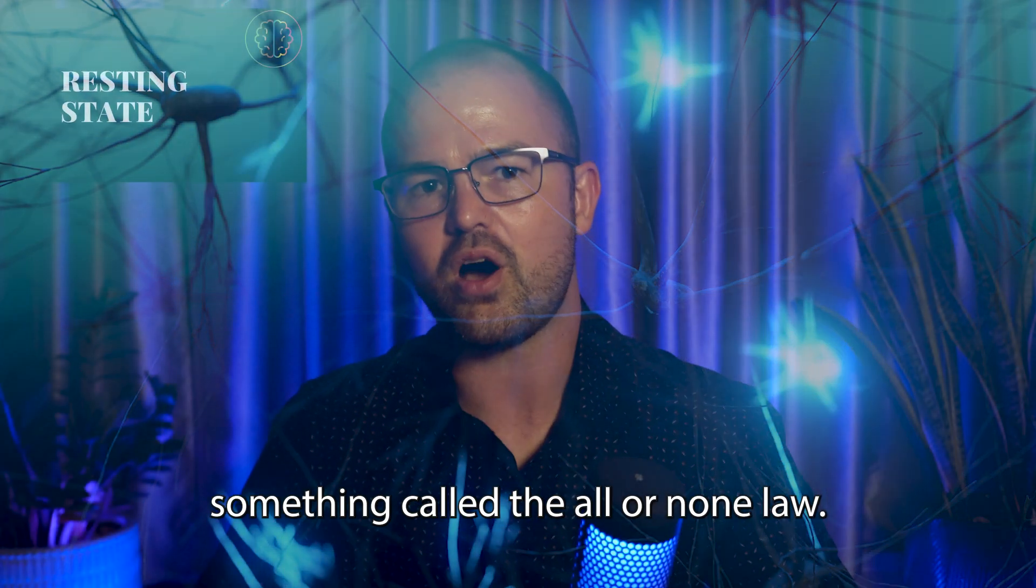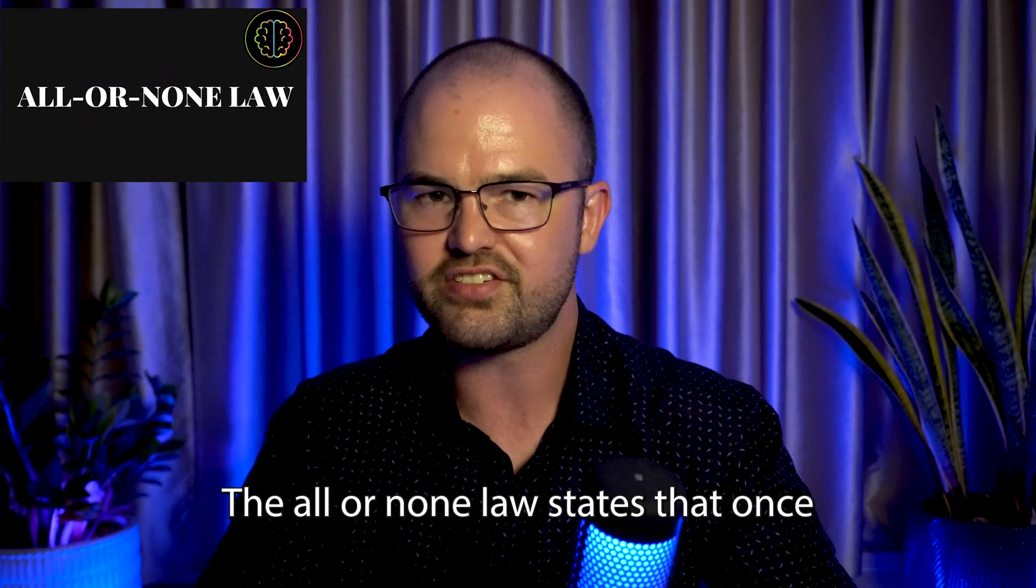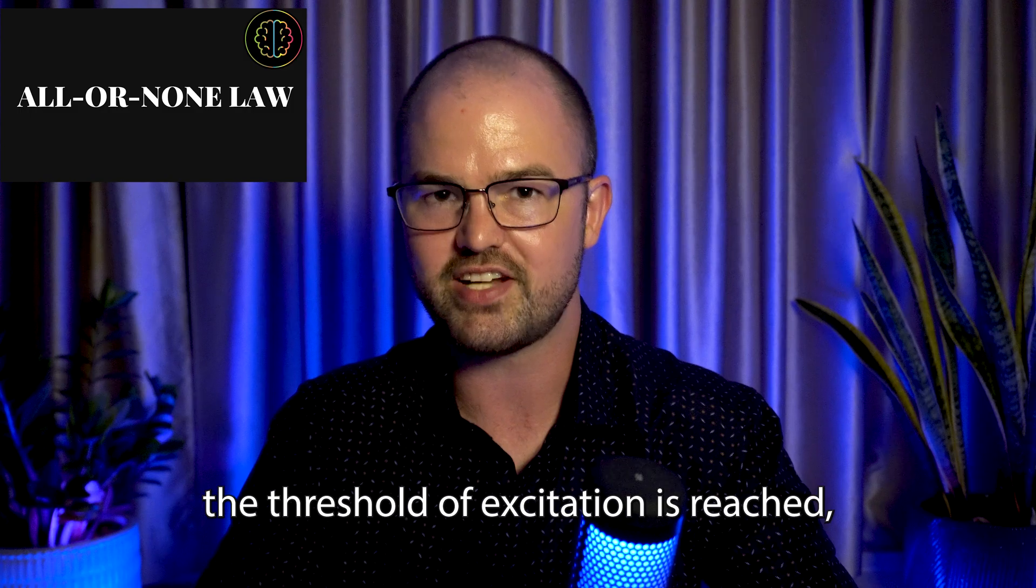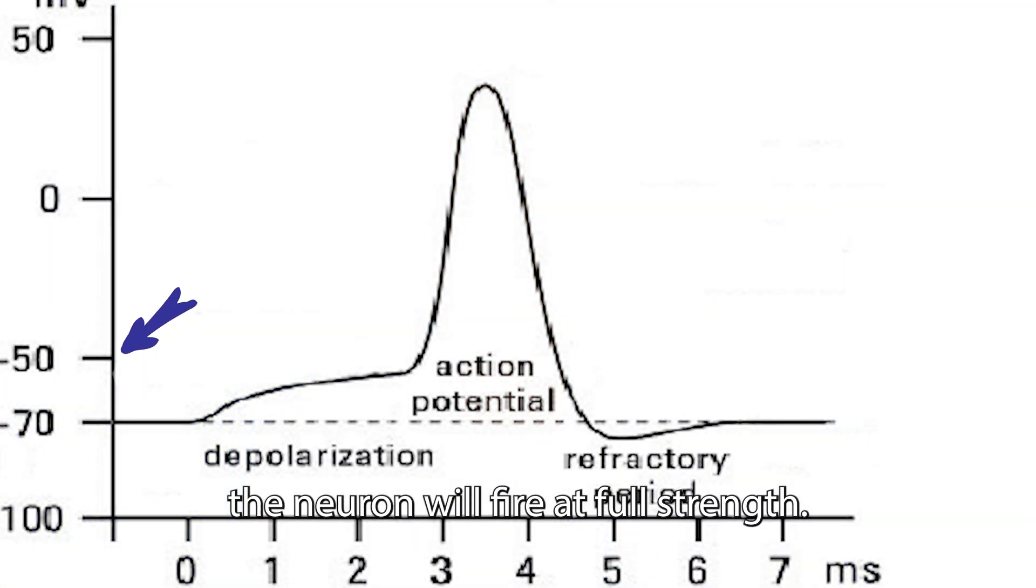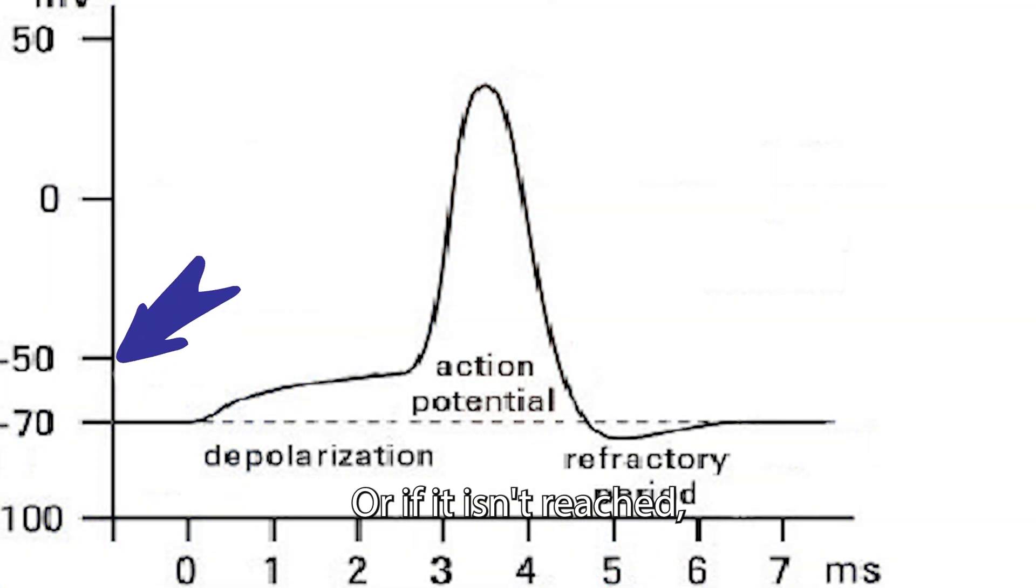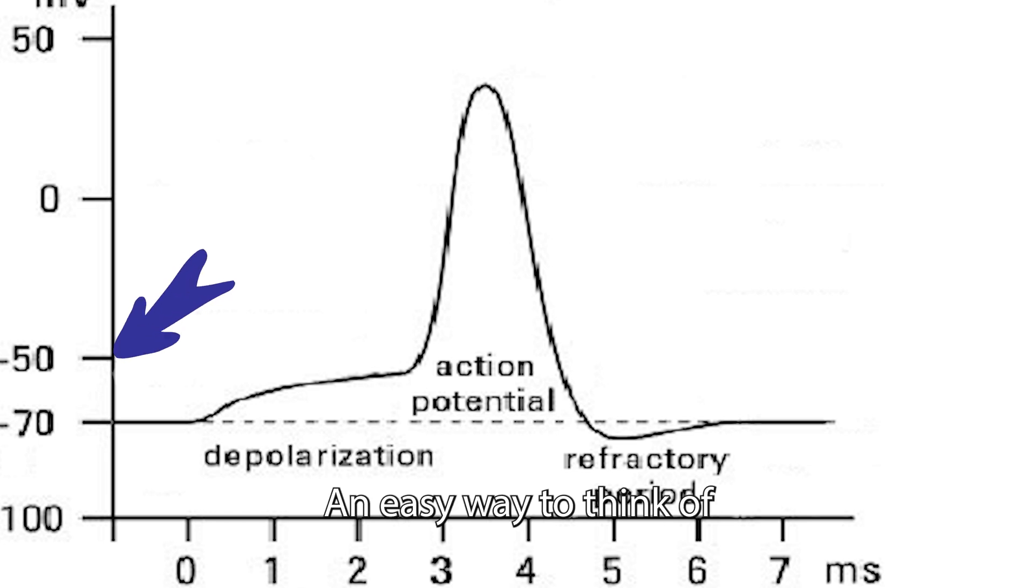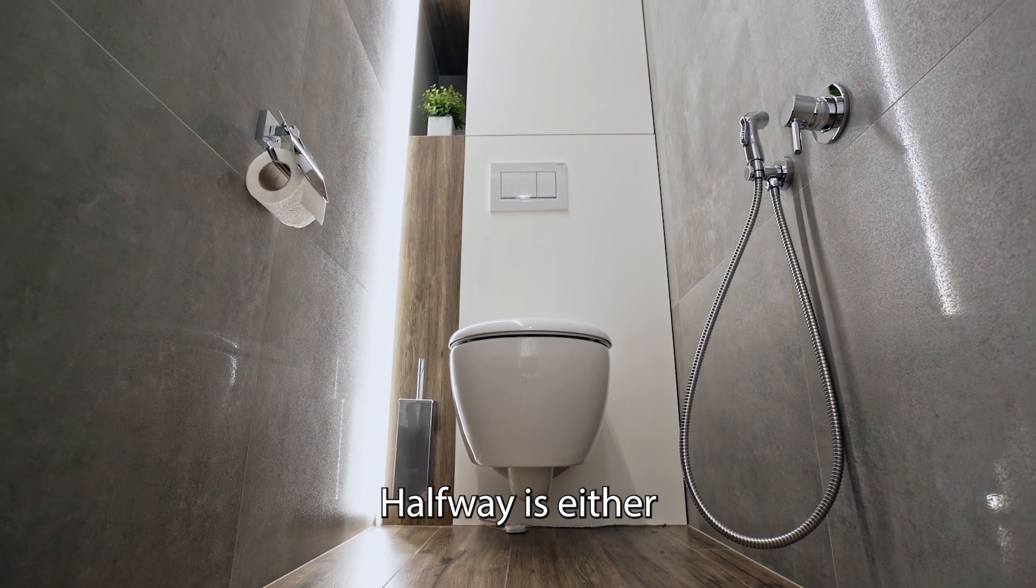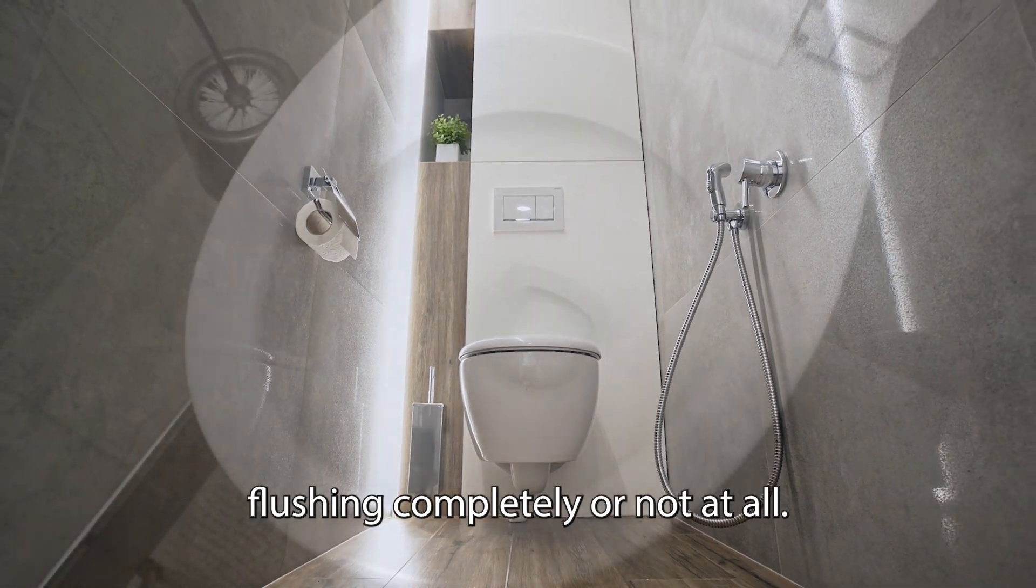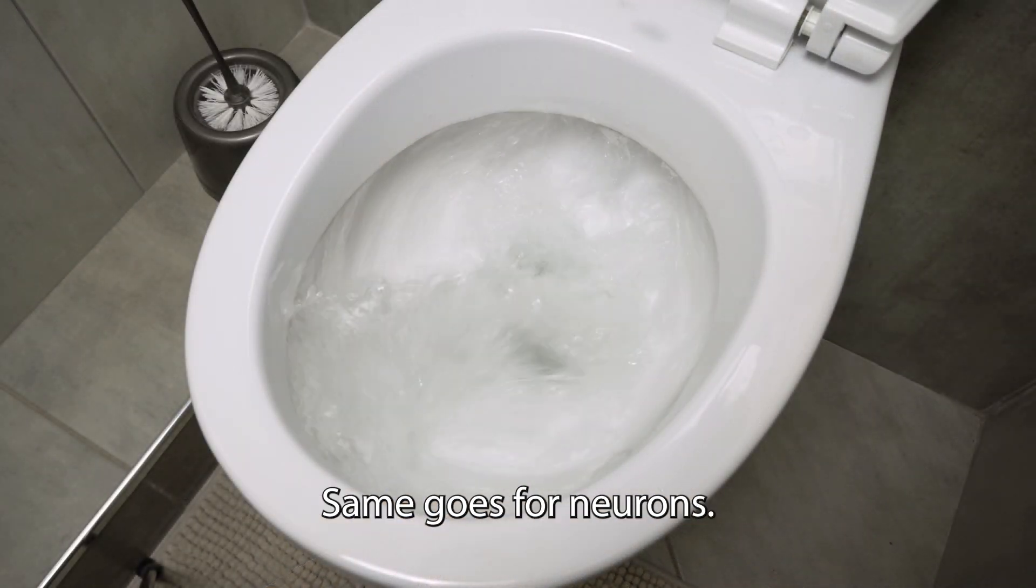This threshold is related to something called the all-or-none law. The all-or-none law states that once the threshold of excitation is reached, the neuron will fire at full strength. Or if it isn't reached, it won't fire at all. An easy way to think of this is by imagining the neuron as a toilet. Toilets do not flush halfway. It's either flushing completely or not at all. Same goes for neurons.